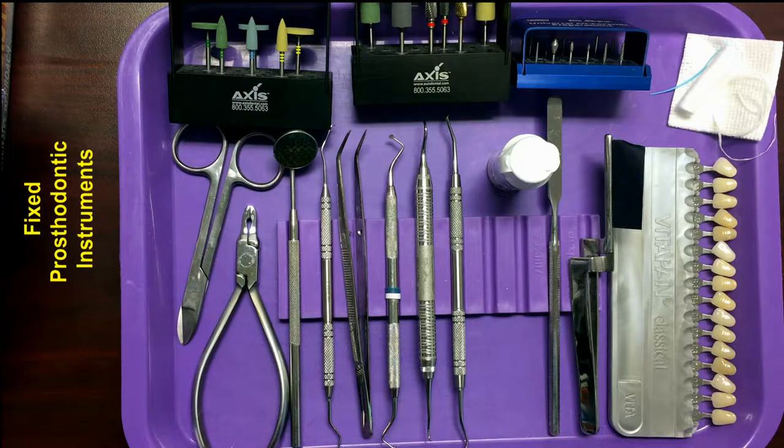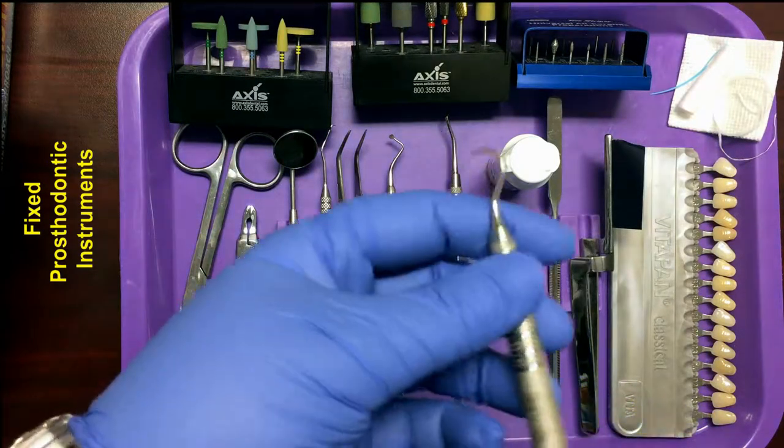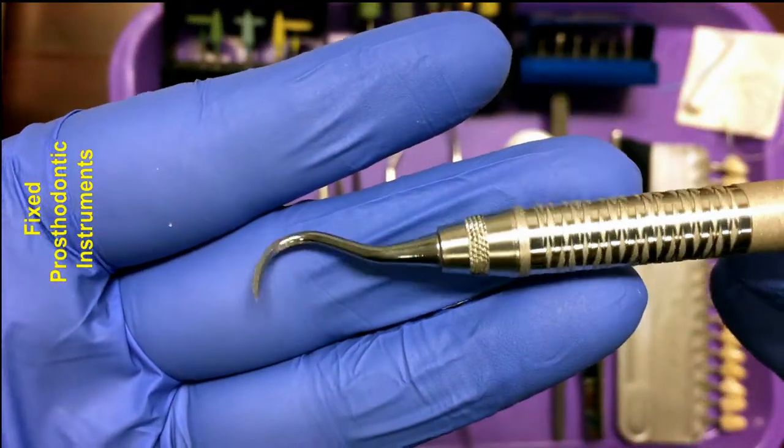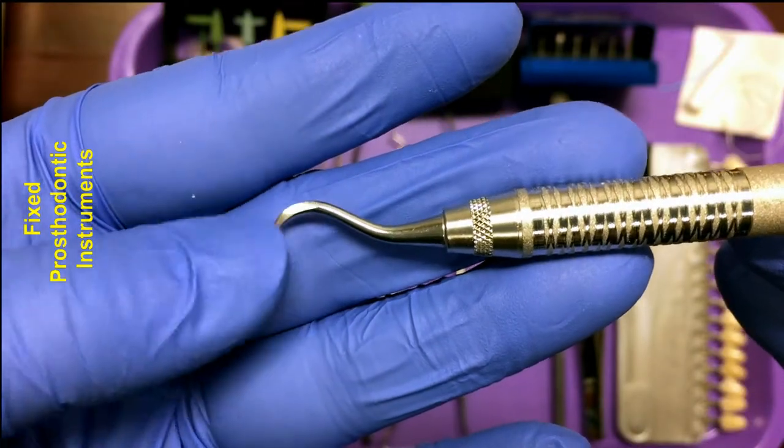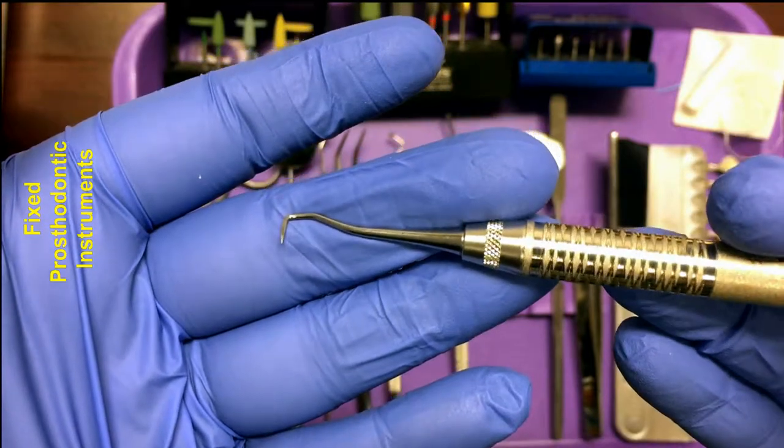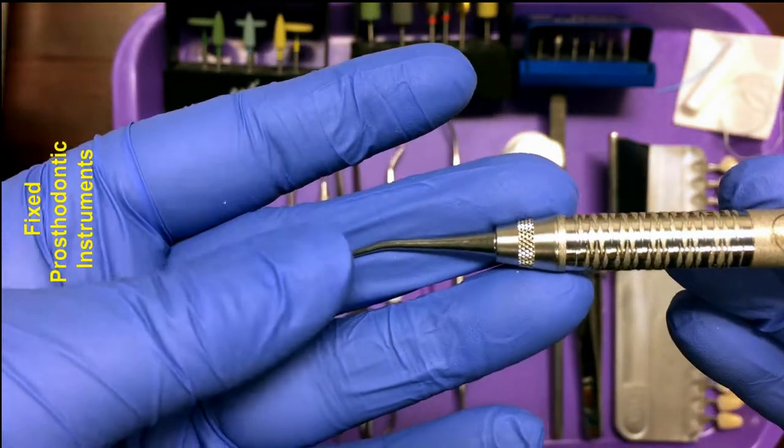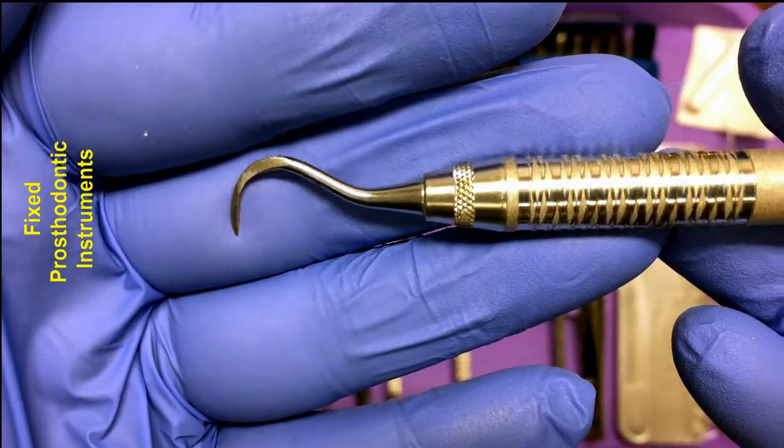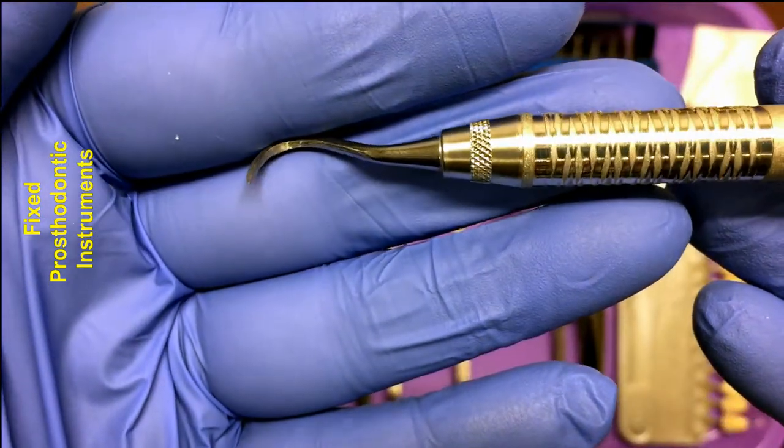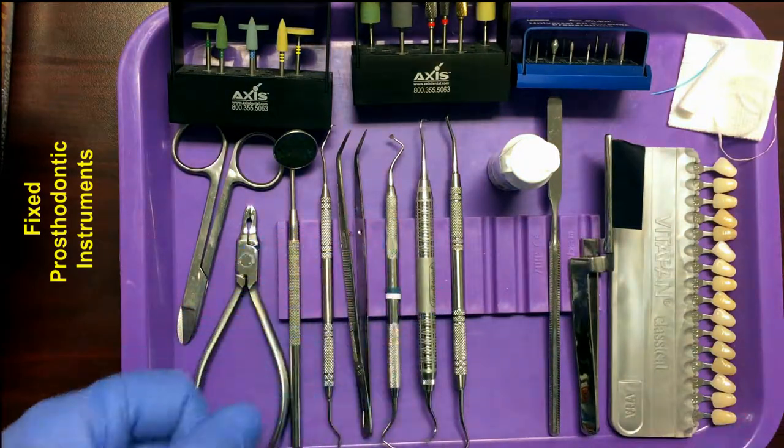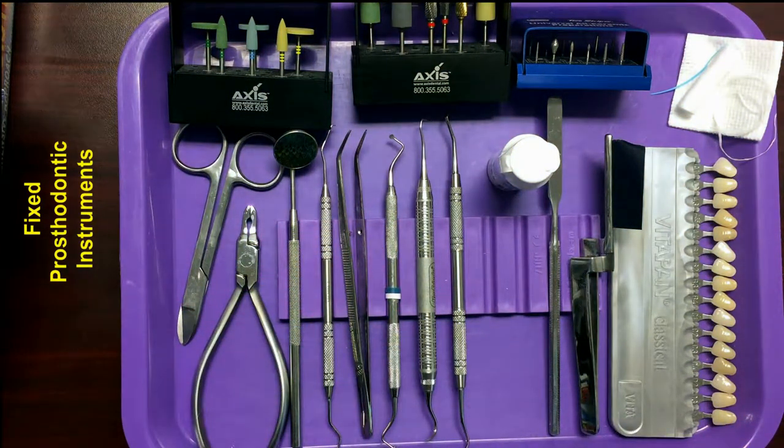Next, we have a scaler. We have a double-ended scaler, a sickle shape on one end and a jaquette shape on the other. Scalers are sharp and they're used to remove deposits from the teeth. On a prosthodontic setup, scalers are commonly used to remove cement from around a seated crown, but they could also be used to clean calculus off the teeth before the preparation or after preparation when the crown is ready to be seated.